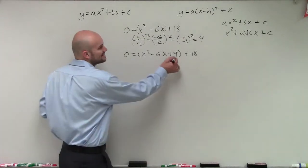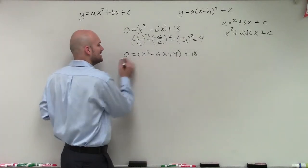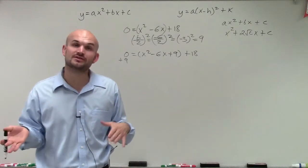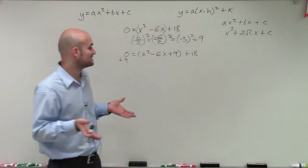Now the important thing is since I added a 9 to create this, I need to make sure I add a 9 on the other side. Whatever you do on one side of the equation, you have to make sure you do on the other side of the equation to keep equivalent equations.